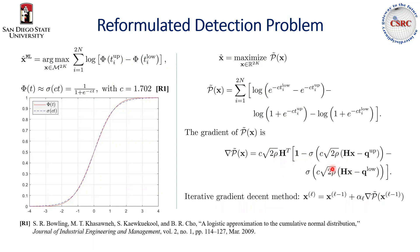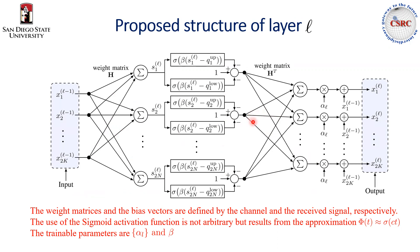And this is the structure of the gradient. Now, we optimize the step size alpha. The idea is to unfold the iterative method and consider each iteration as a layer of a deep neural network. And this is the structure of one layer of the proposed deep neural network. Here, you can see that the weight matrix is defined by the channel matrix H. The bias vector is defined by the received signal q_up and q_low. The activation function here is the sigmoid function — it is not arbitrary but results from the use of the approximation of the objective function. And the trainable parameters here are the step size alpha and the scaling parameter beta.